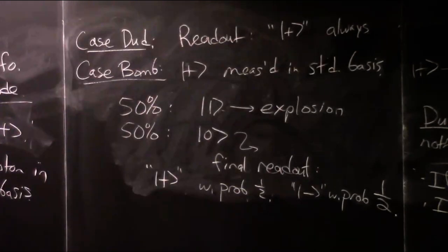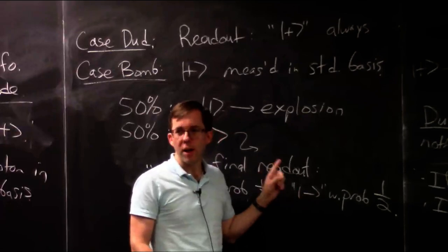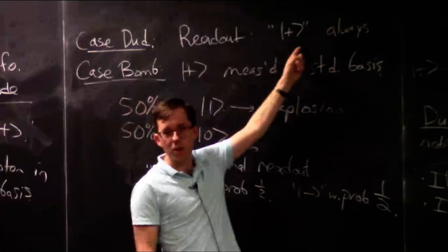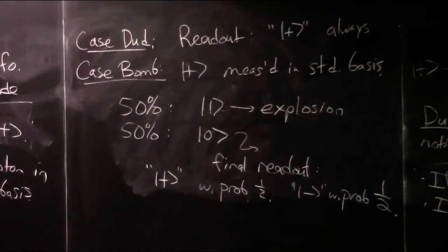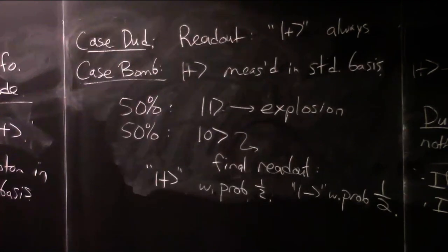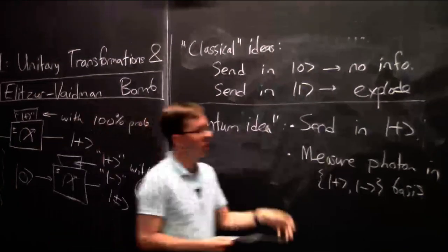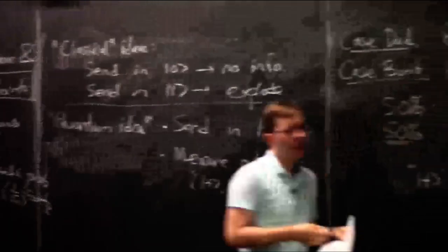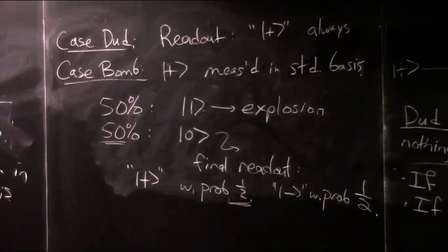This is helpful. At the very end, the photon comes out, you don't explode, and the measurement readout is minus — then you know for sure it's the bomb, because in the dud case the measurement always reads out plus. The summary: if there's a bomb, you have a 50% chance of exploding. But you have a 25% chance of not only not exploding, but successfully detecting the bomb. The remaining 25% chance is inconclusive. Sometimes they call this 'interaction-free detection.' It's better than you could do if you could only send in classical bits.